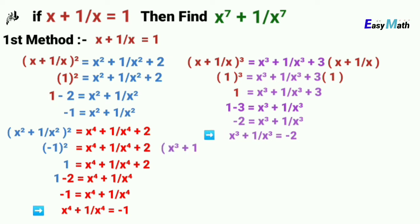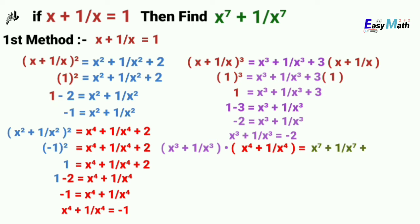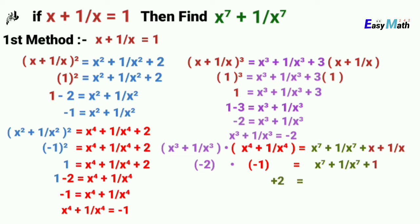After multiplication of these two equations, we have x to the power 7 plus 1 over x to the power 7 plus x plus 1 over x. We have calculated that x cubed plus 1 over x cubed is minus 2, x to the power 4 plus 1 over x to the power 4 is minus 1, and x plus 1 over x is 1. So finally, x to the power 7 plus 1 over x to the power 7 equals 1.